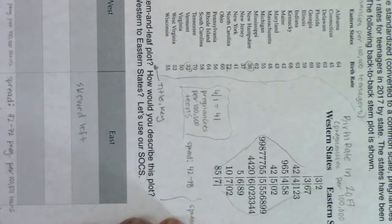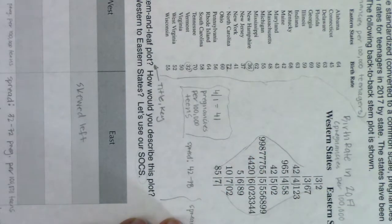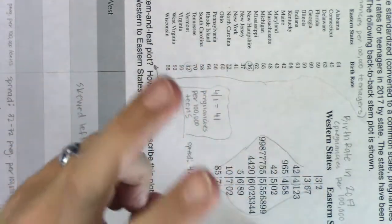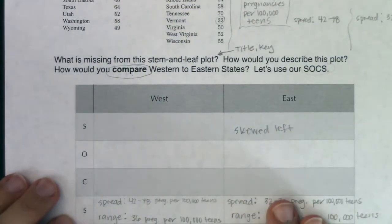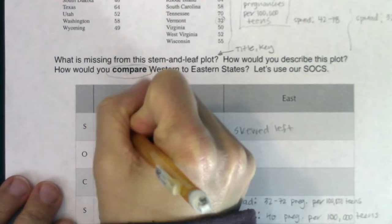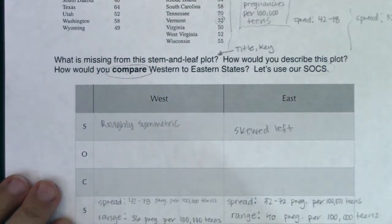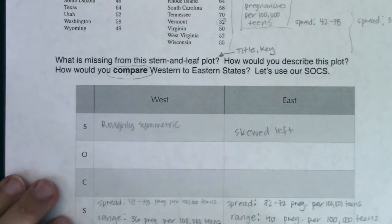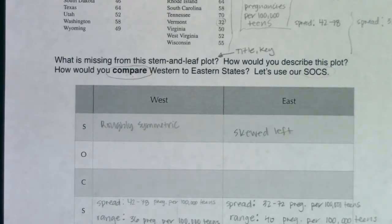Since the x-axis values increase right to left, if you think this is skewed left you actually have to flip it and say it's skewed right. If you say roughly symmetric, flipping it stays roughly symmetric. So for the western states' shape, I could accept roughly symmetric or skewed right — definitely not skewed left. You could also check: if the mean is larger than the median you're skewed right; if the mean is smaller than the median you're skewed left.